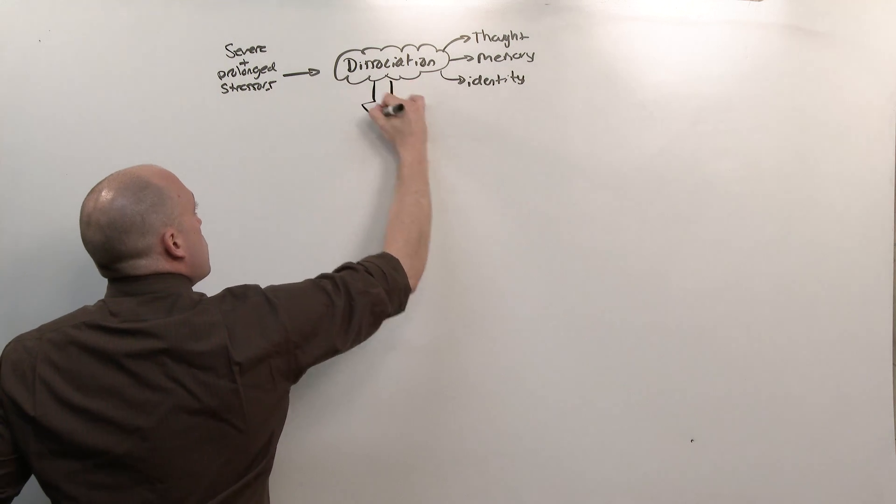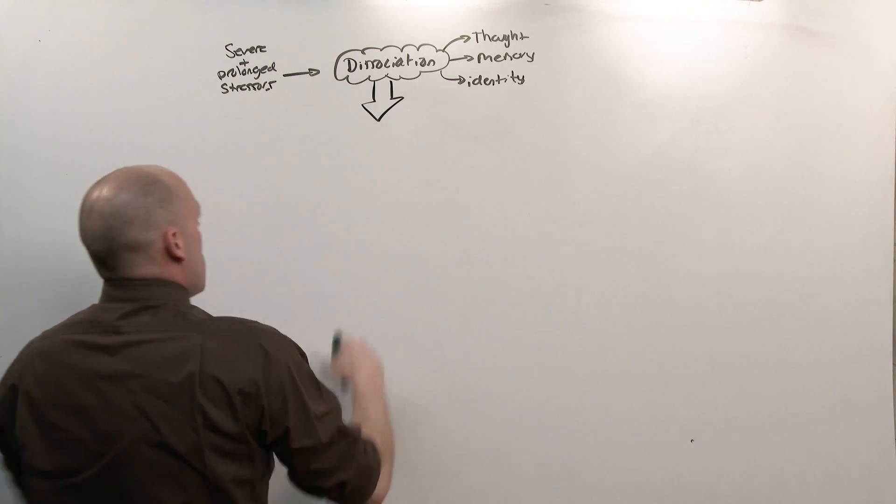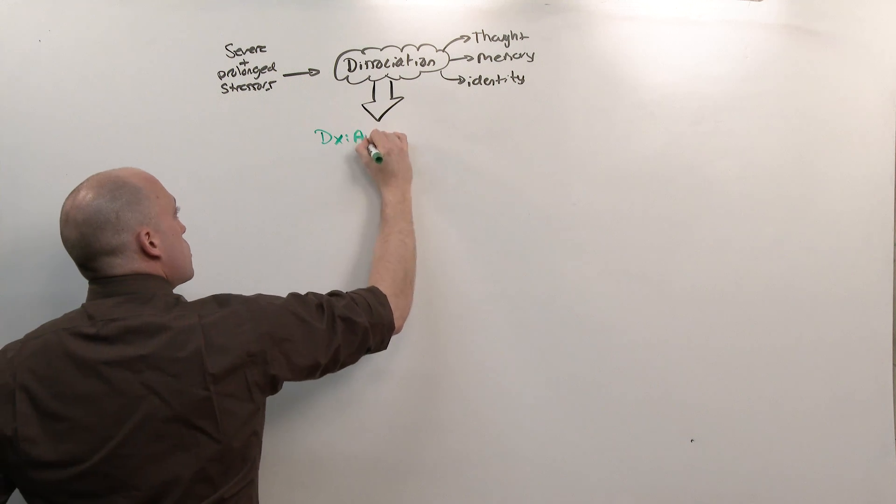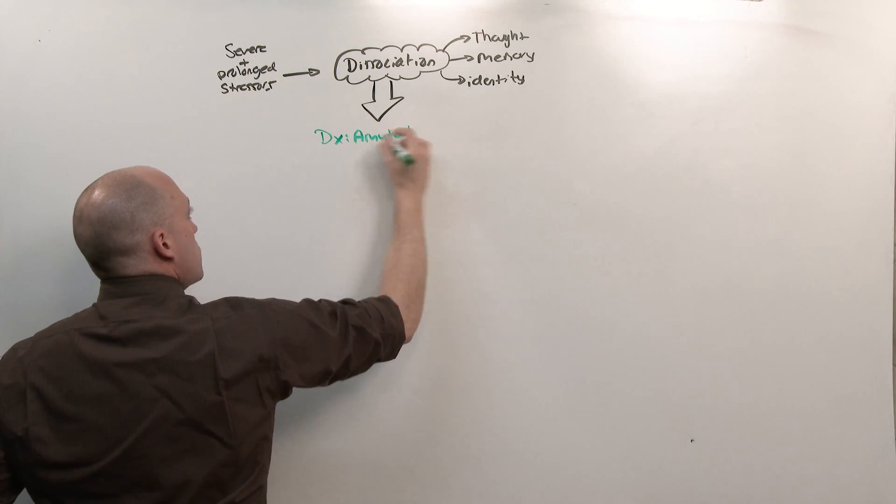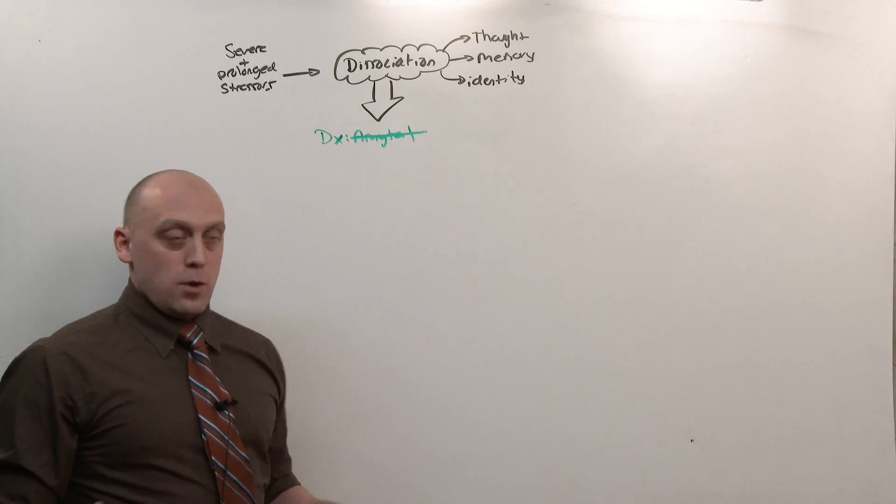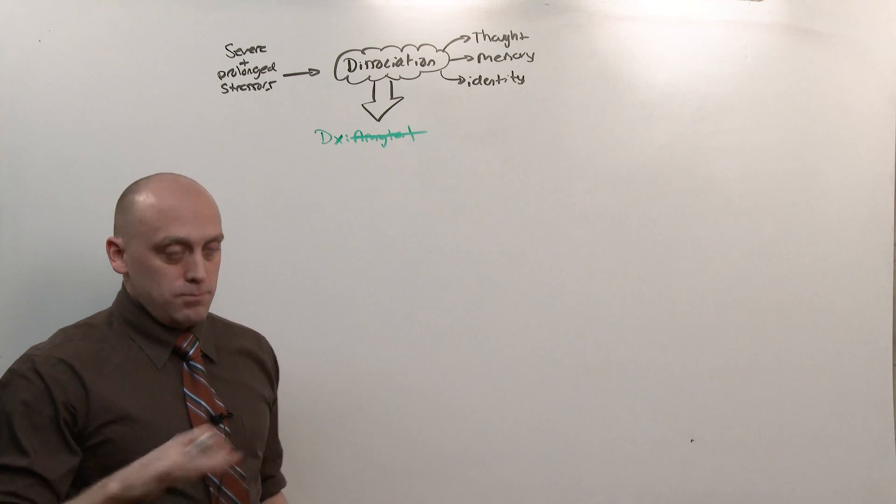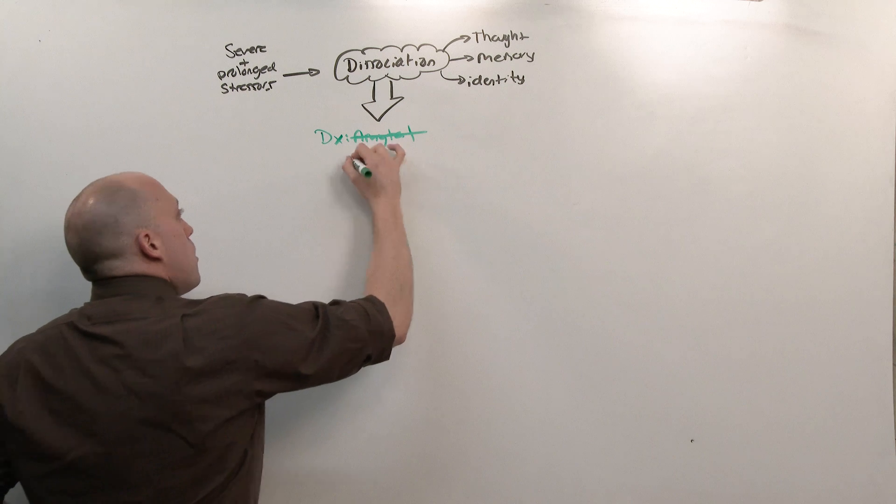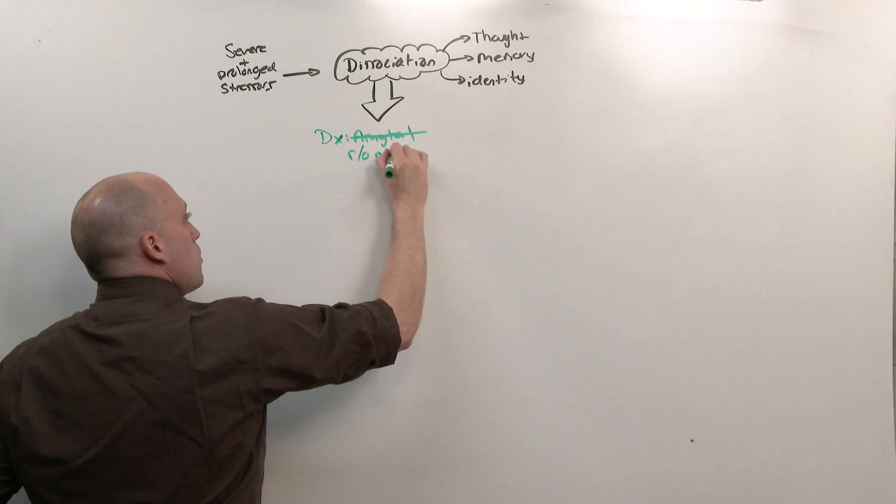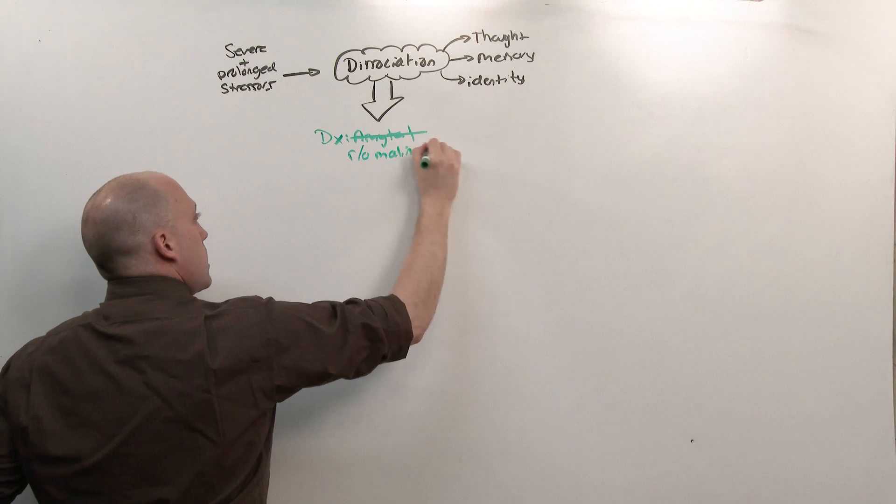And the way you go about diagnosing dissociation is to rule out other things. We used to use the truth serum, Ametol. The Ametol interview is now the wrong answer. It actually has no benefit. So I put it up here because it used to be the right answer. Strike that out. What you want to do, and what the Ametol interview tried to do, was rule out malingering, people who are faking it.